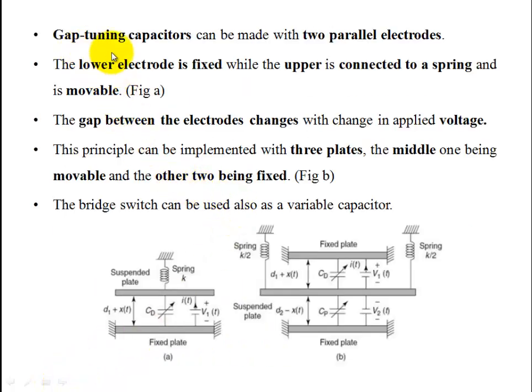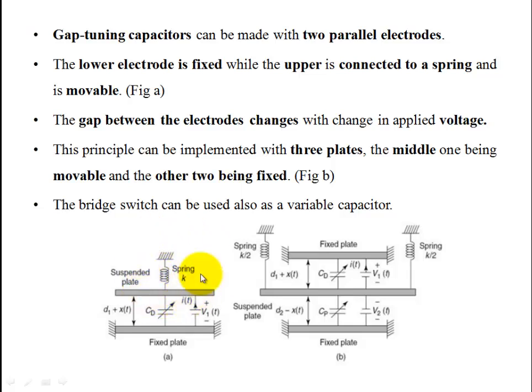The first type is the Gap Tuning Capacitor. Two electrodes are formed with a gap between them. One plate is fixed and the other plate is movable, attached to a spring. By applying voltage, the gap between the plates changes, which changes the distance and therefore the capacitance.